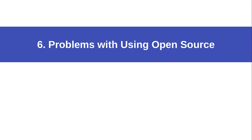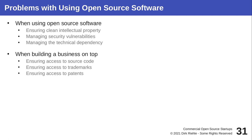Do not let all these problems obscure the benefits of using open source. High-quality open source components are free, standard-compliant, and avoid vendor lock-in — there are many reasons to use open source. But even open source is not free in the sense of zero cost: there are costs in organizational capabilities, good governance, and so forth. As you use open source software you need to set up governance.